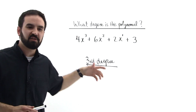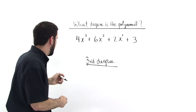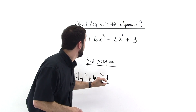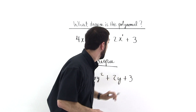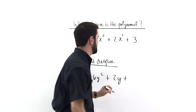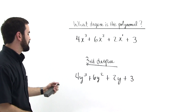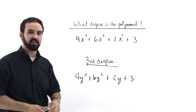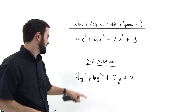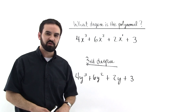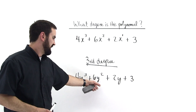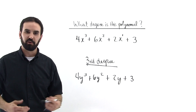Now, these could be y's — you could have four y cubed plus six y squared plus two y plus three, and the question would ask what degree is this polynomial. Same thing: you just look at the variable terms. It could even be four times joe cubed plus six times joe squared plus two times joe plus three, and it would still be a third-degree polynomial. Just look at the letter — whatever the highest exponent is, that's the degree of the polynomial.